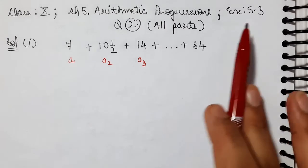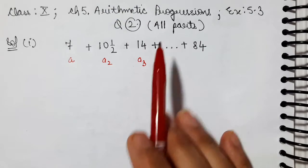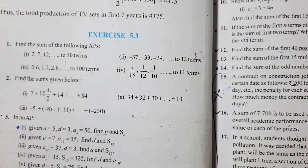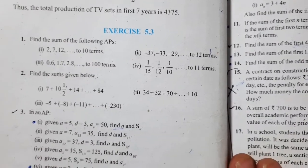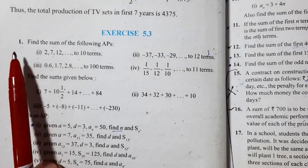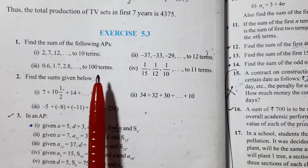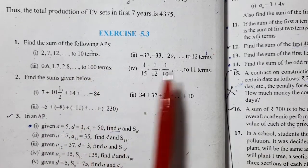Today we will do exercise 5.3 question number 2. We will solve all these parts. The question is: find the sums given below. We have an AP given here and we have to find the sum.